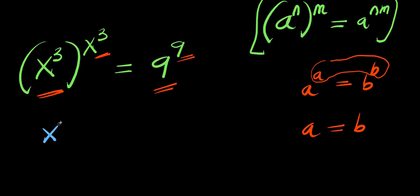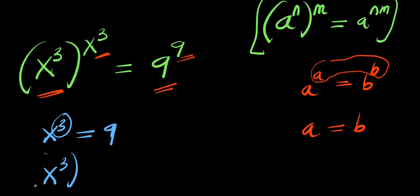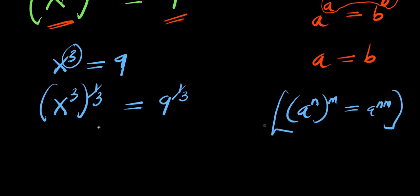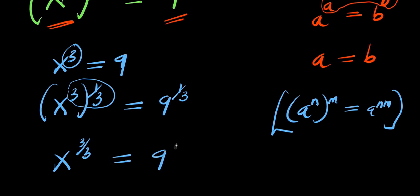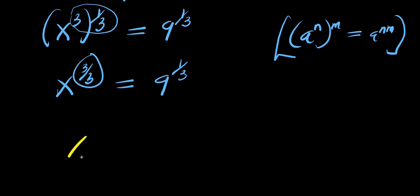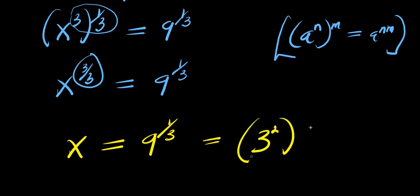So I'm simply going to have x to the power of 3 equals 9. To solve for x, I eliminate the 3 by raising both sides to the power of 1 over 3. That gives x to the power of 3 over 3 equals 9 to the power of 1 over 3. Since 3 over 3 is 1, I simply have x equals 9 to the power of 1 over 3.